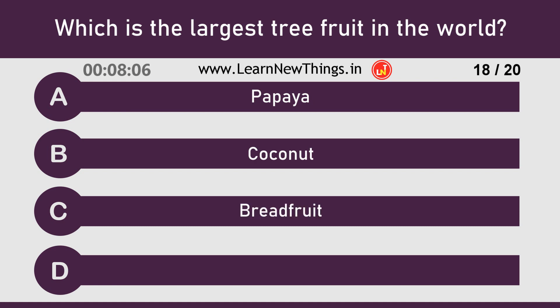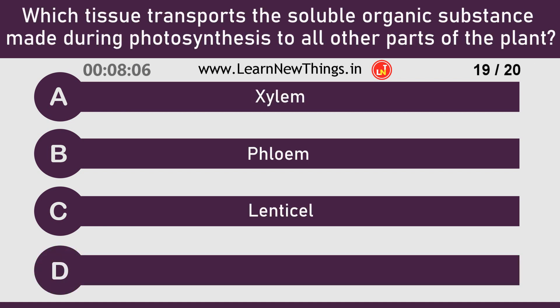Jackfruit. Which tissue transports the soluble organic substance made during photosynthesis to all other parts of the plant?